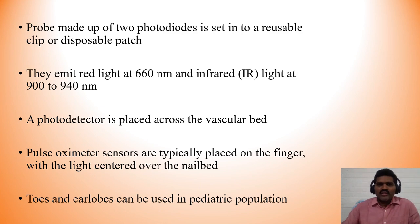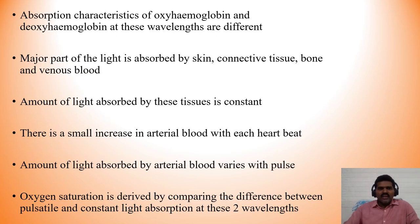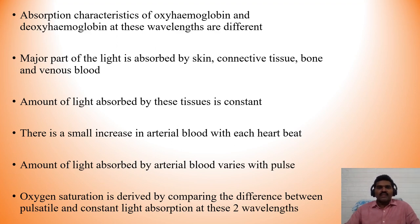The probe is made up of two photodiodes set into a reusable clip or a disposable patch. They emit red light at 660 nm and infrared light at 900–940 nm. A photodetector is placed across the vascular bed. Sensors are placed on the fingers with the light centered over the nail bed — not on the pad of the nail — for accurate readings. Toes and earlobes can also be used, and the nasal septum can be used for central oxygen monitoring. The absorption characteristics of oxyhemoglobin and deoxyhemoglobin differ at these wavelengths — that is the basic principle for deciphering oxygen saturation.